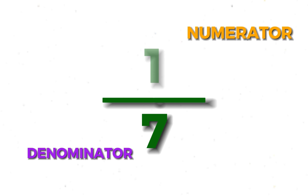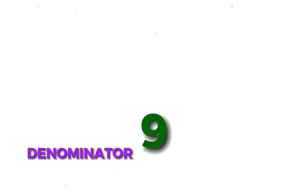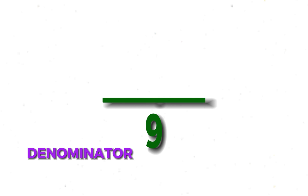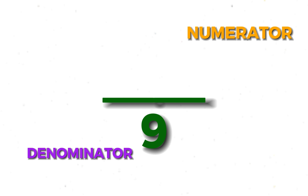Then we write the numerator, which is one — the piece of cake that was selected. This cake has been divided into eight, and one piece is selected. How do we write the fraction? We write the denominator, which is nine, because the cake has been divided into nine pieces. Then we write the numerator, which is one — the piece of cake that was selected.